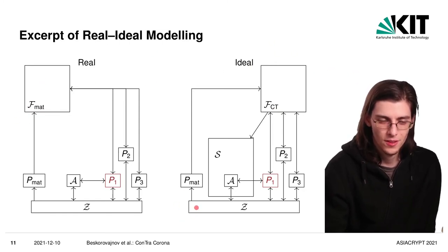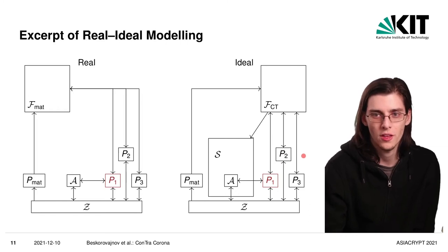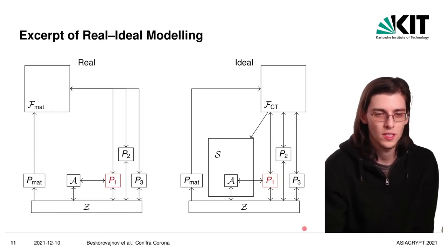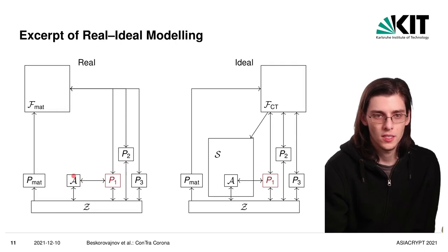And you may notice that the ideal functionality FMAT that was present here in the real world is missing in the ideal world. This is because the contact graph that the environment sends to PMAT is forwarded directly to FCT. And FCT can then use the contact graph to look up which parties are in proximity to each other and then by that which party should be warned from which infection to best model the ideal functionality we would want from contact tracing. And in order for the simulator to simulate all the messages that the adversary sees in the real world, we would need to send in this leakage graph that we discussed earlier. And this is done by FCT explicitly sending the leakage graph as we described to the simulator.